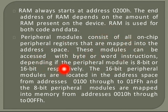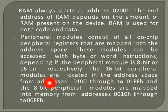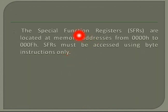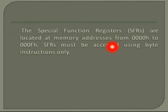For peripheral modules, there are two types: 8-bit and 16-bit. They consist of all on-chip peripheral registers mapped into the address space, and can be accessed by byte or word operations depending on whether the peripheral module is 8-bit or 16-bit respectively. 16-bit modules are located in the address space from 0100h to 01FFh. 8-bit peripheral modules are mapped to addresses from 0010h to 00FFh. Special function registers (SFRs) are located at memory addresses from 0000h to 000Fh and can only be accessed using byte instructions.